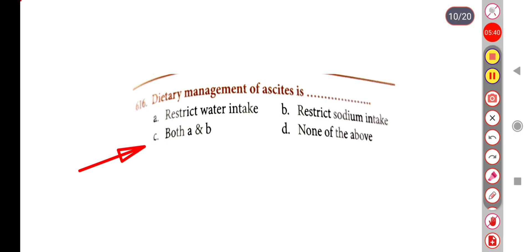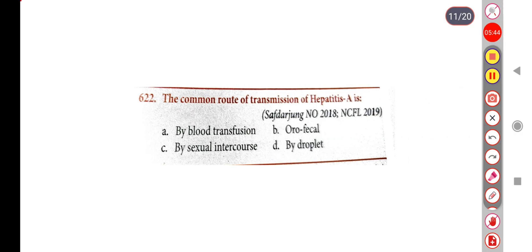Next question: The common route of transmission of Hepatitis A is — Option A: By blood transfusion, Option B: Orofecal, Option C: By sexual intercourse, Option D: By droplet. The correct answer is Option B, Orofecal.